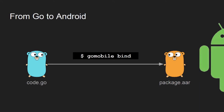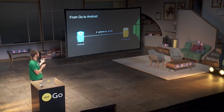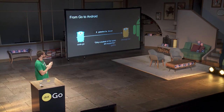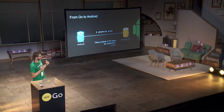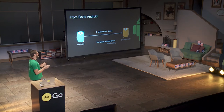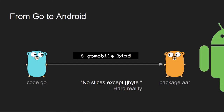There is a command called `go mobile bind` that will actually produce an Android archive out of your Go code, except the docs say that only a subset of Go types are supported. It means that you cannot use slices except byte slices, so it's kind of a limitation.